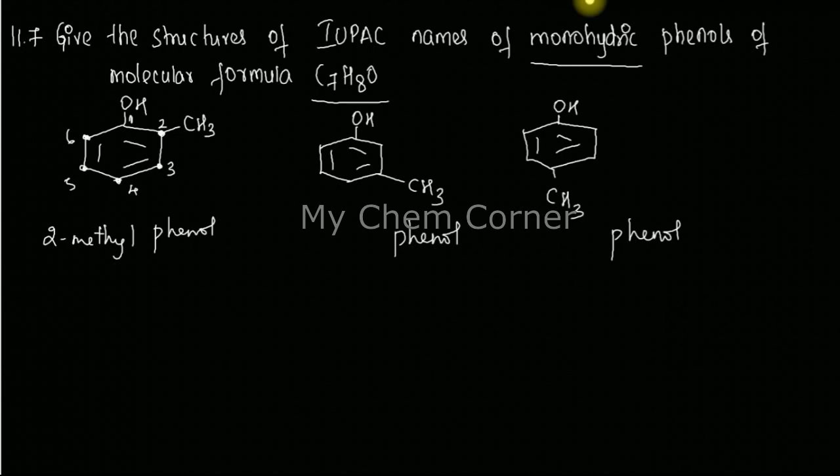In the next one, it's at position number three, so I'm going to write this as 3-methyl phenol. And in the last one, it's 4-methyl phenol because the methyl group is at position number four.